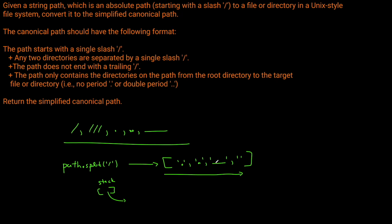If we see some sort of directory name — like ABC or root, basically any value that isn't a dot, double dot, or empty string — we just add it to the stack. And if we see an empty string, we just continue and don't do anything. So the logic is: dot → do nothing; double dot → pop from stack if non-empty; directory name → push to stack; empty string → do nothing.